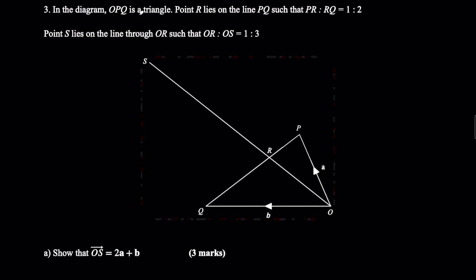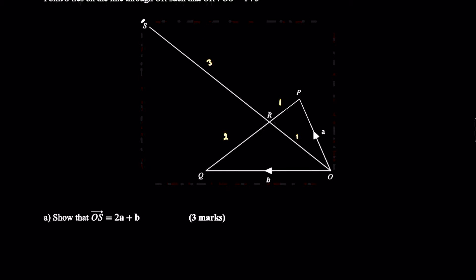Question 3. In the diagram, OPQ is a triangle. Point R lies on PQ such that PR to RQ equals 1 to 2. Point S lies on the line through OR such that OR to OS equals 1 to 3. Show that OS equals 2a + b. Interpret the diagram: R divides PQ with 1 part to 2 parts, and S is on the extension of OR with OR being 1 part of the total 3-part length OS.